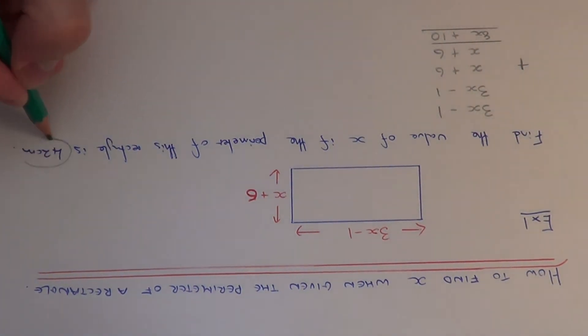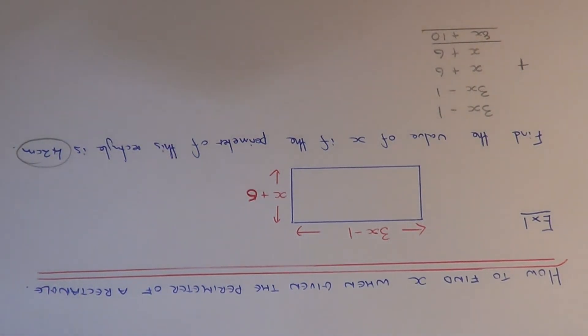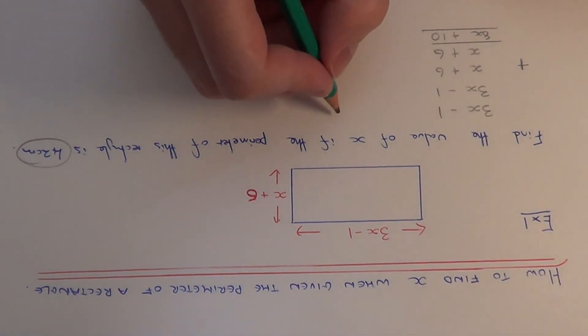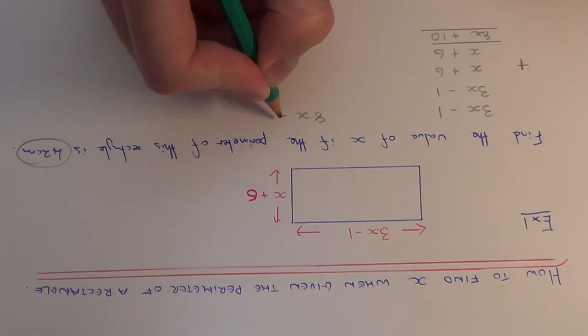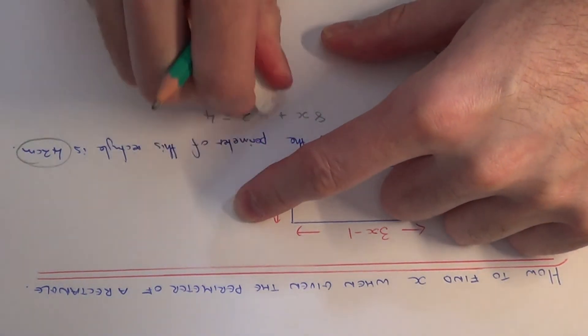In the question we're told that the perimeter is also 42cm, so we can make 8x plus 10 equal the 42. This gives us an equation which we can now solve.